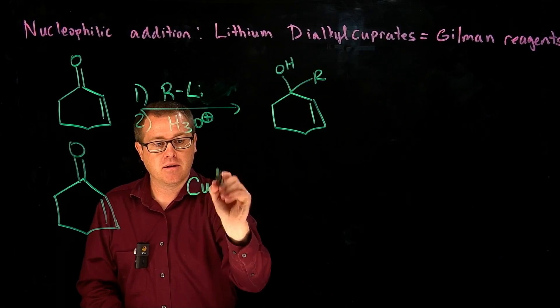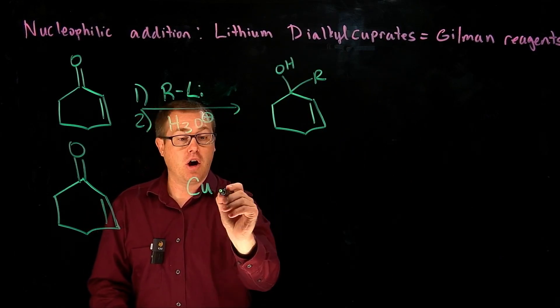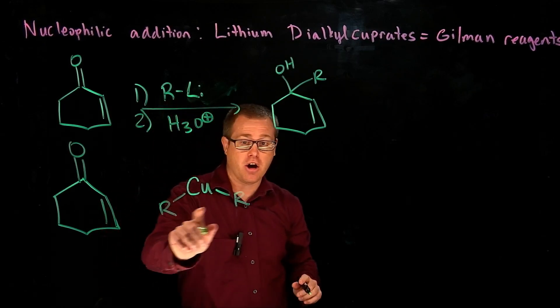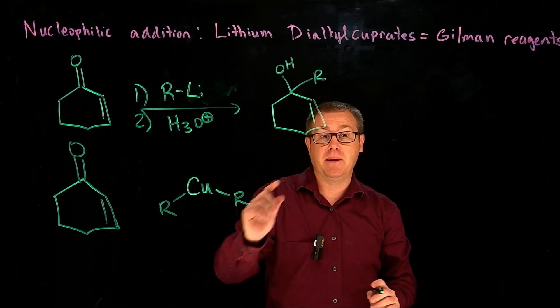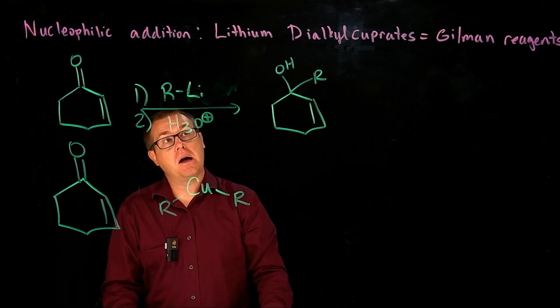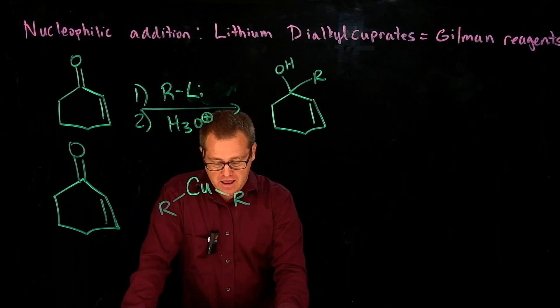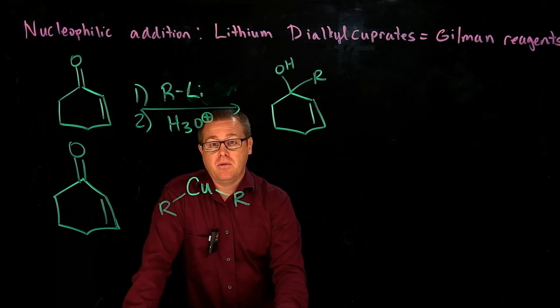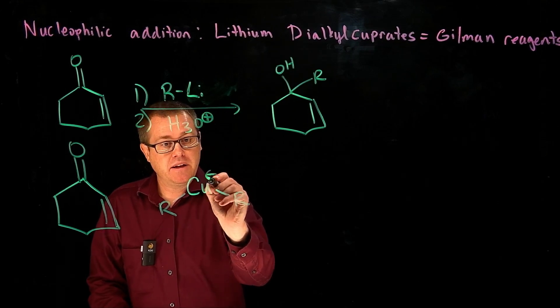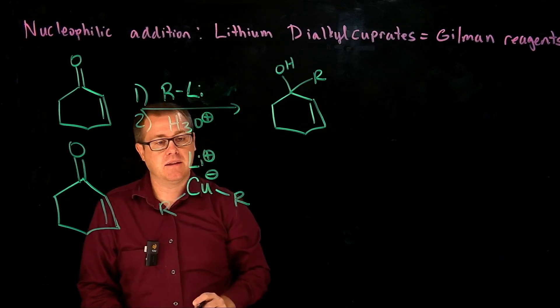have a copper metal there, and we have two R groups attached to it. And these R groups need to be the same in order for this reaction to be useful. And then what do we have here? That copper is going to be negatively charged, and that's going to be associated with the positive lithium right there.